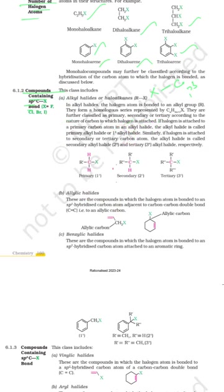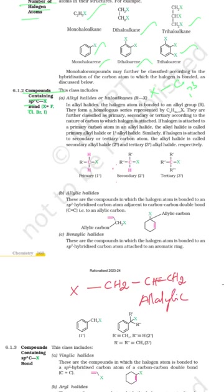The next classification is allylic haloalkane. An allylic haloalkane is one where the halogen is bonded to an sp3 carbon that is adjacent to a carbon-carbon double bond — that is, next to a C=C double bond. We call this an allylic haloalkane.